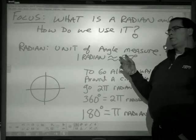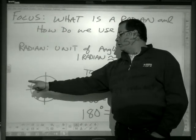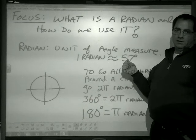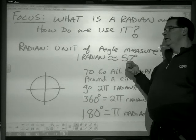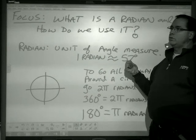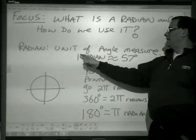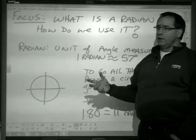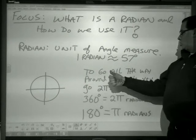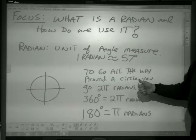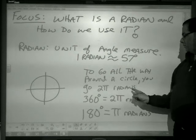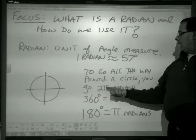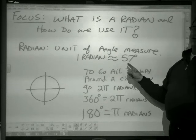If we think about 57 degrees, all the way around the circle I have about six of these. Six 50s is about 300, six 7s is 42. So there's about a little more than six of these radians as I go around the circle. To be more specific, to go all the way around the circle, you go 2π radians. Remember, π is about 3, 3.14, and 3 times 2 is about 6.